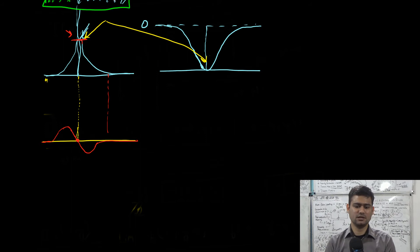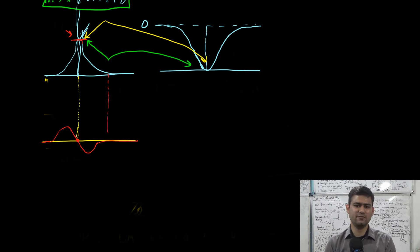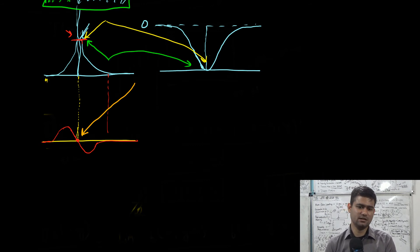So the first-order derivative based methods work on the principle of detecting maxima or minima, whereas the second-order derivative based methods work on the principle of detecting the zero crossing of the second-order derivative. This zero crossing is a point where the second-order derivative changes its sign — for example, from positive to negative or from negative to positive — and usually this point of zero crossing provides the midpoint of an edge.